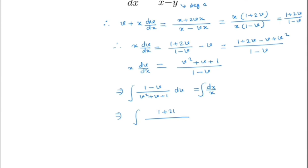We write 1 - v using (1 + 2v) with a factor of minus one-half, giving minus one-half times (2v + 1). Since we need 1 and not minus one-half, we add 3/2. So the integral becomes: integral of [-½(2v+1)/(v²+v+1) + 3/2 · 1/(v²+v+1)] dv = integral of dx/x.